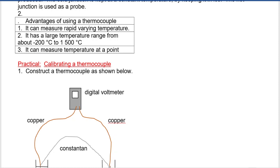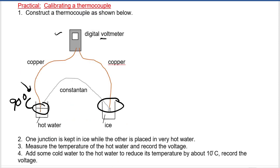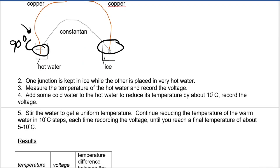Now on the digital display, remember it measures the voltage, and the voltmeter reading is proportional to the temperature difference between the hot junction and the cold junction. So there's going to be a decrease in the digital voltmeter display. You keep adding cold water and start recording the temperatures as they decrease by about 10 degrees Celsius, and also record the voltage. Make sure you stir the water to get a uniform temperature and continue reducing the temperature of the warm water in 10 degrees Celsius steps, each time recording the voltage until you reach a final temperature of about 5 to 10 degrees Celsius.